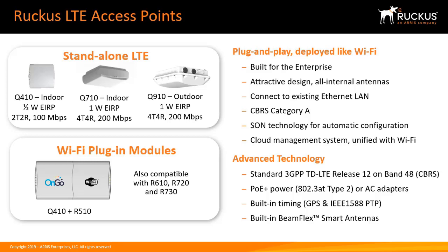We've also included some special things with timing. When you are solving an in-building cellular problem, these networks need to have GPS coordination for timing. And if you're inside a building, you're probably not going to get a GPS signal. To deal with this issue, we've done something special — we have a patented technology where one AP gets the GPS signal near a window and shares that timing with all the other APs in the network. So you only need one GPS device, which is a huge advantage by simplifying deployed indoor LTE networks.